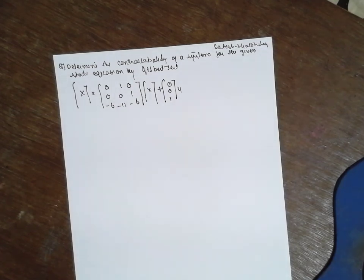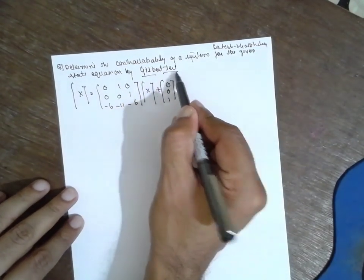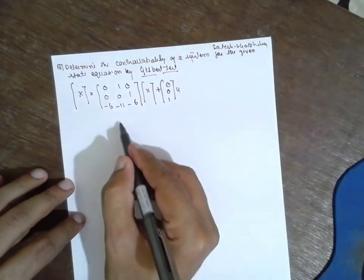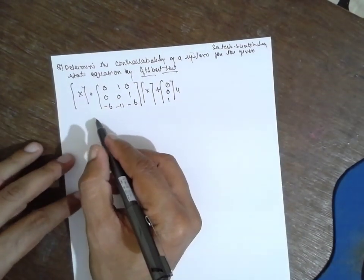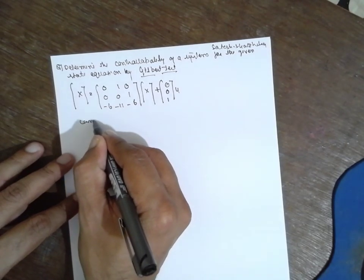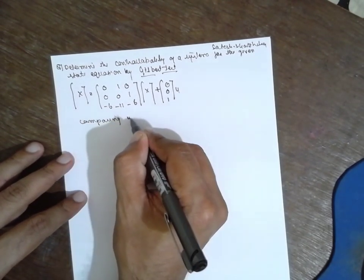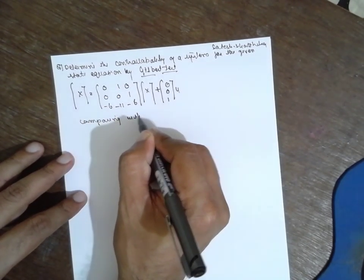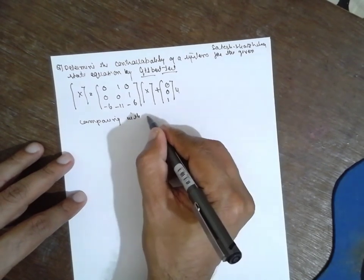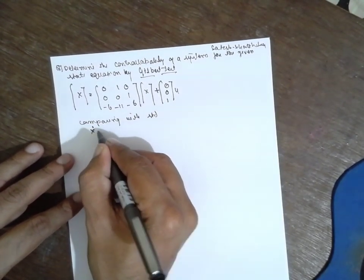I am Subhush Gankar. Today I am teaching you control engineering, focusing on the Gilbert test. In the Gilbert test, we have to compare with the standard. There is a method you have to follow — compare with the standard, that is: x-dot is equal to Ax(t) plus Bu(t).